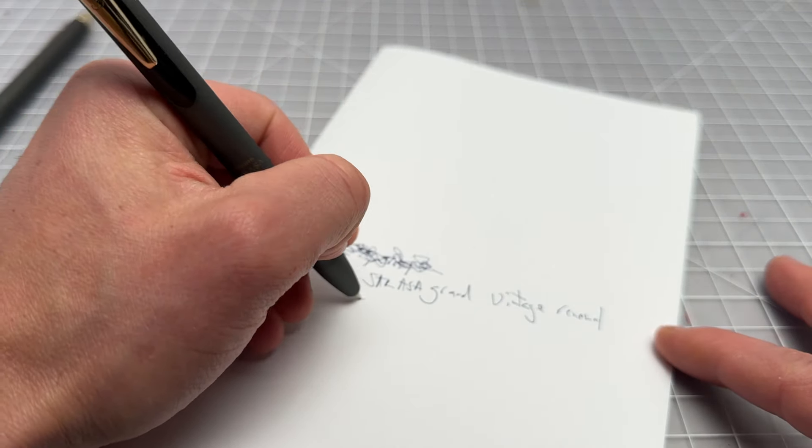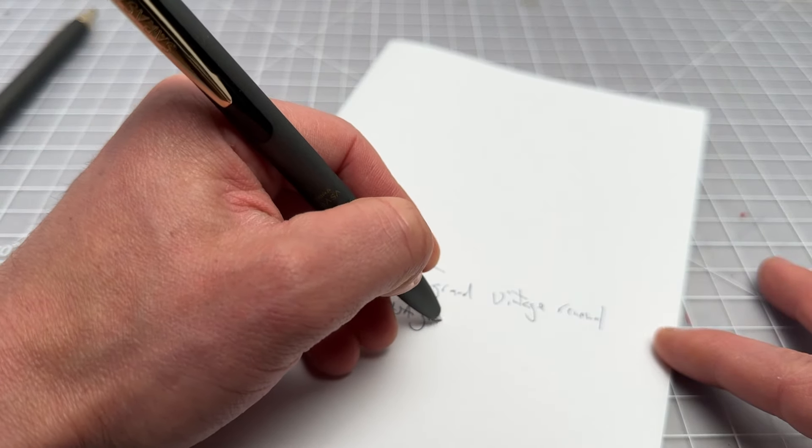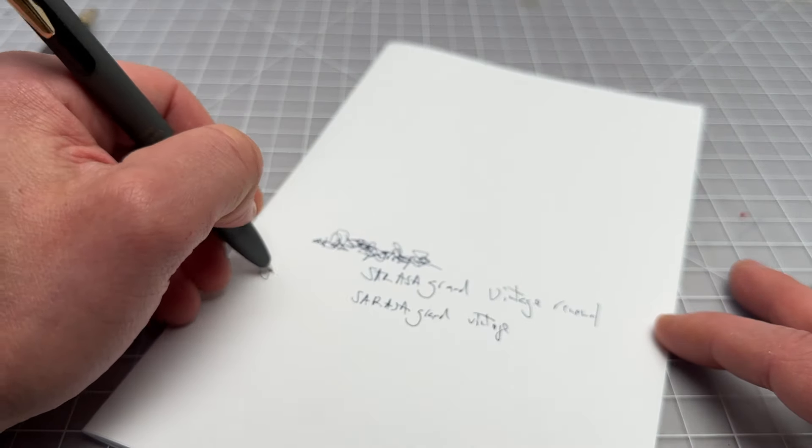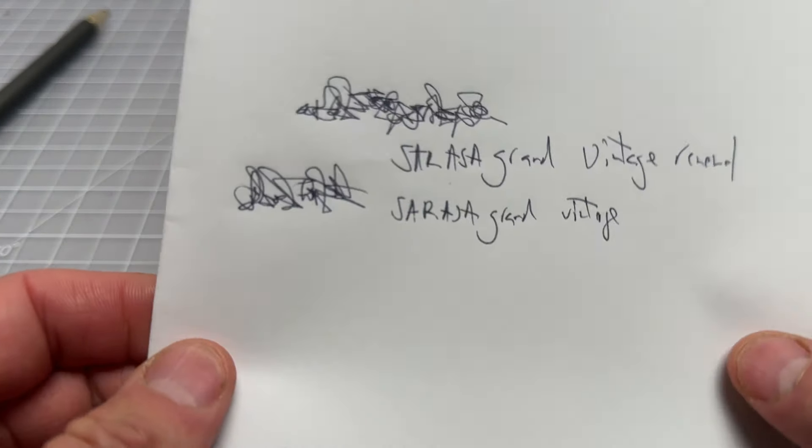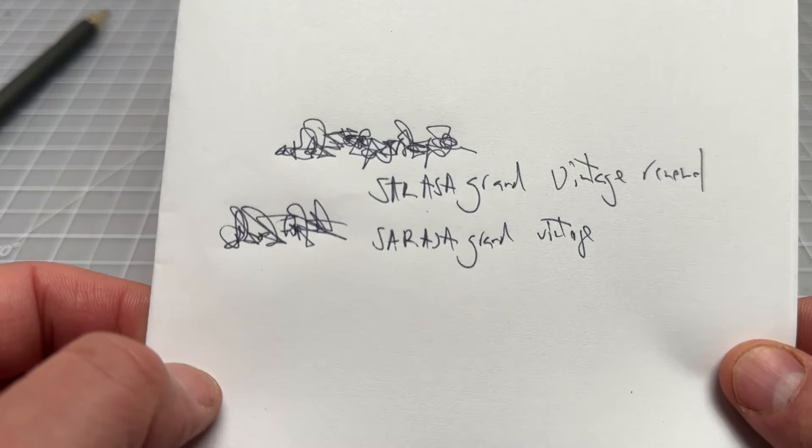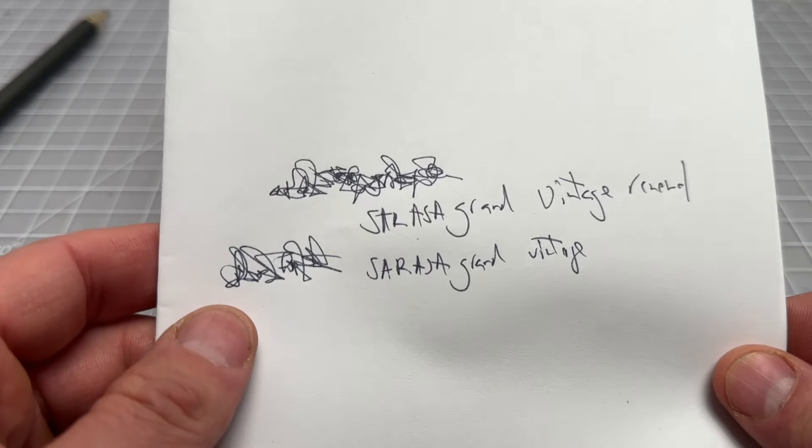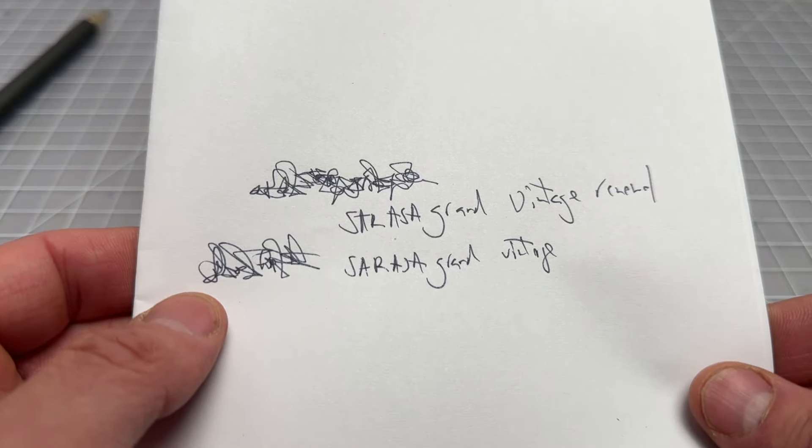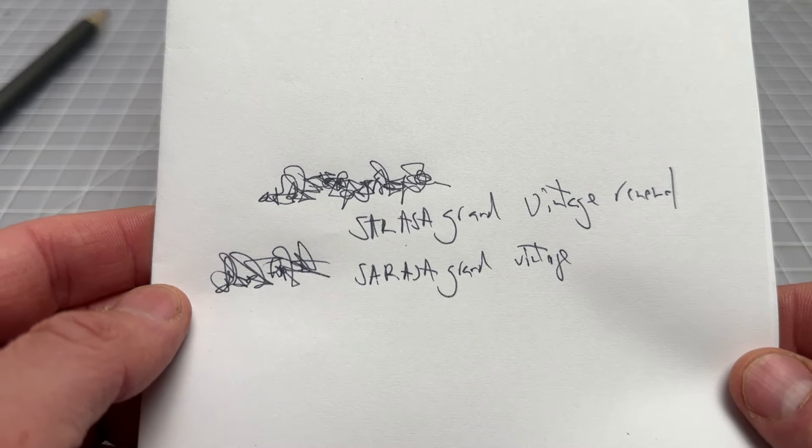And here we have the Sarasa Grand. Looks the same because it is the same. They both use that faded gray whatever Zebra calls it. It's a gel pen refill and in the JF 0.5 millimeter refill no reason to expect them to be any different and they aren't any different. It's a good writer.